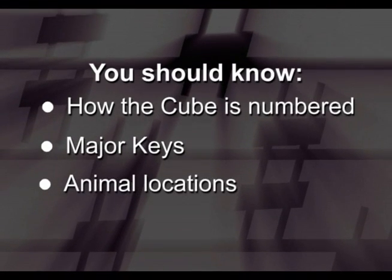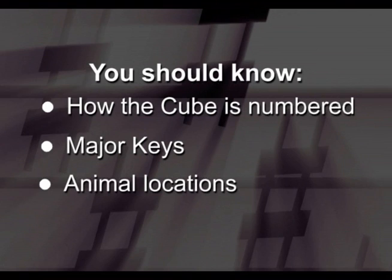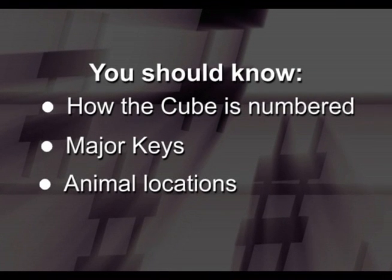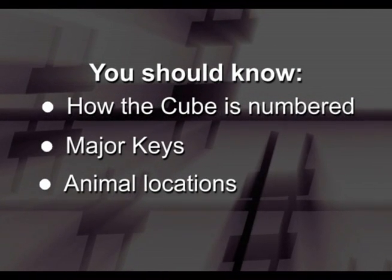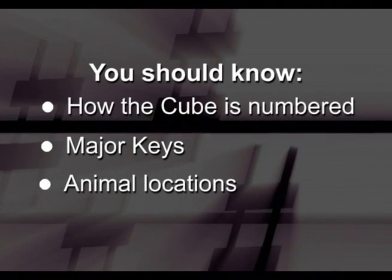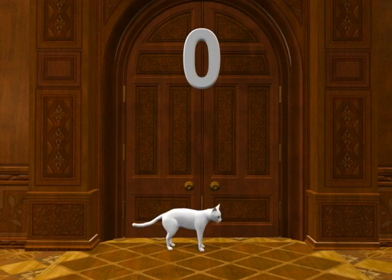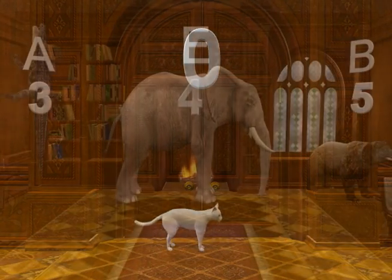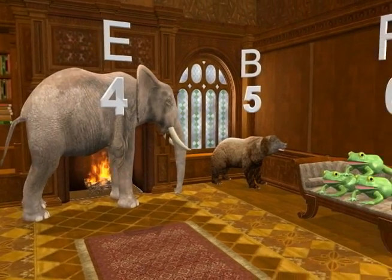You should now know how the cube is numbered, the major key represented by each animal, and the animal assigned to each numbered location in the cube. With the exception of the cat at location zero, all the rest of the animals in the cube represent major keys that have sharps.